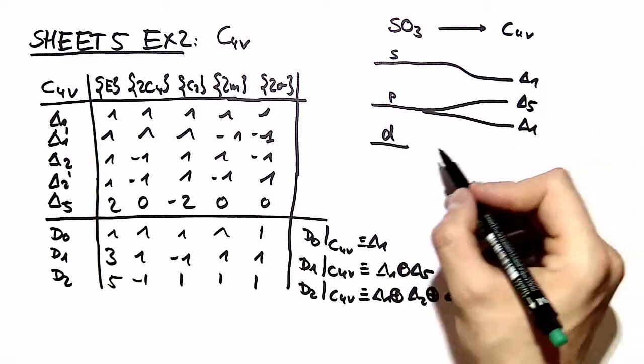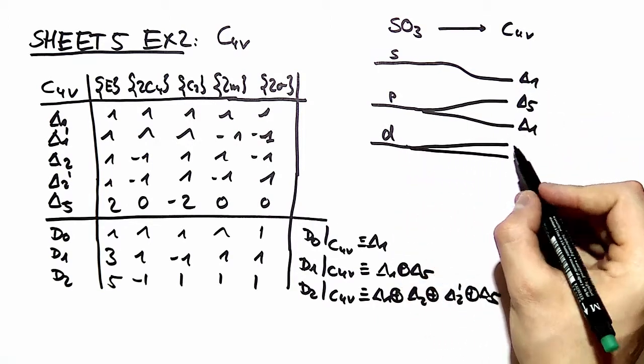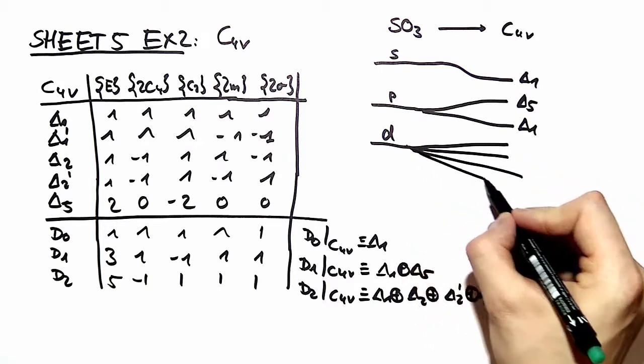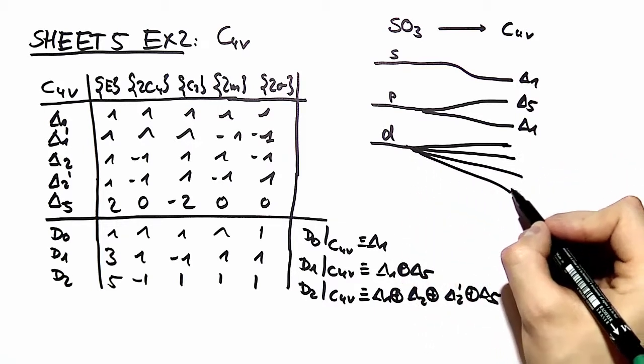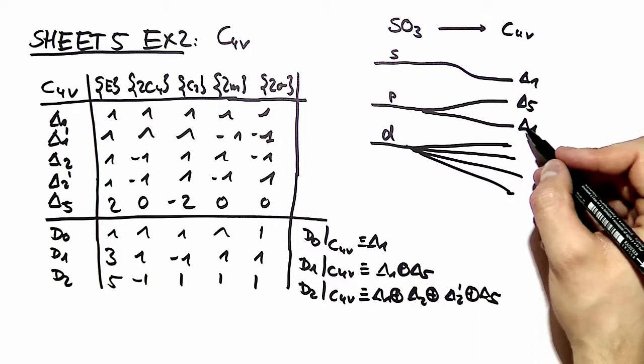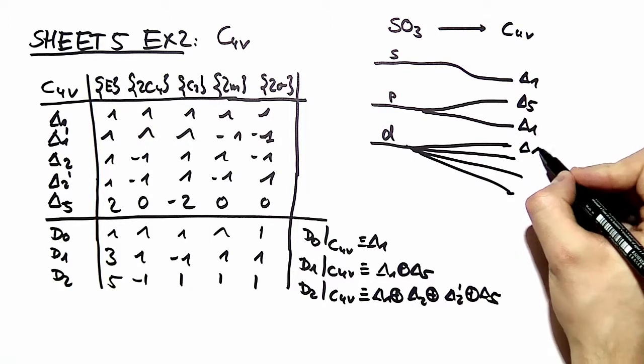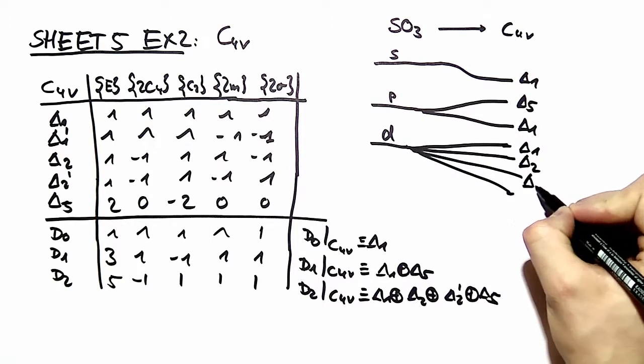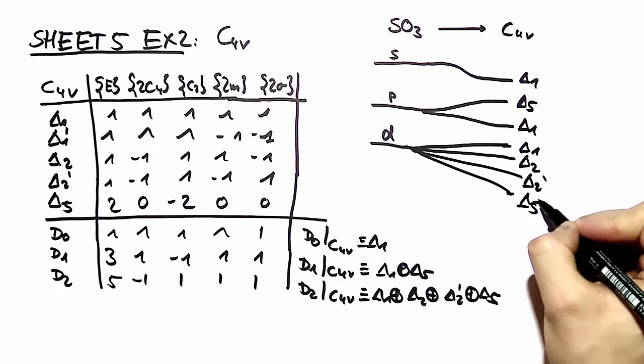And the d orbital splits into the four different irreducible representations, namely delta 1, delta 2, delta 2 prime, and delta 5.